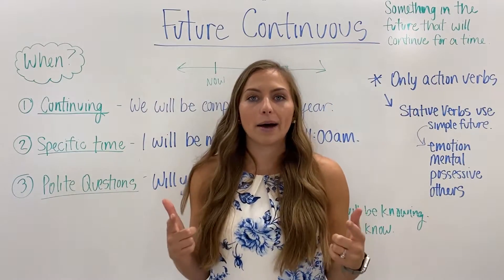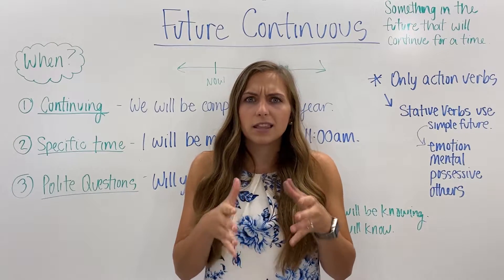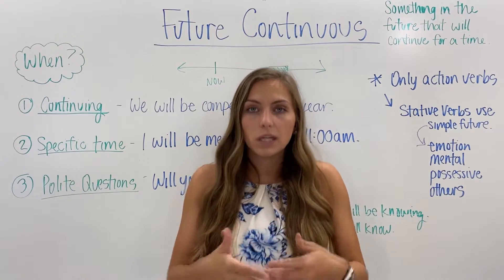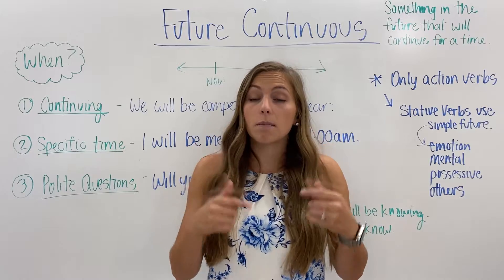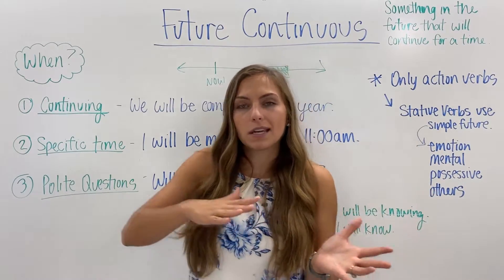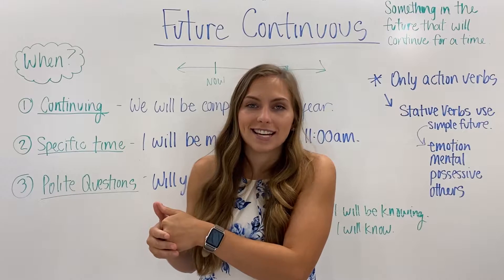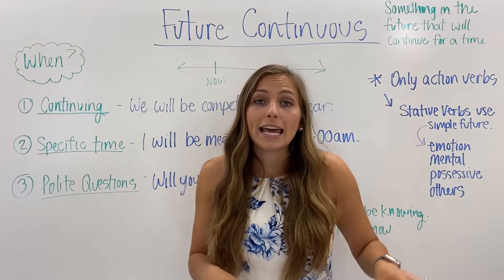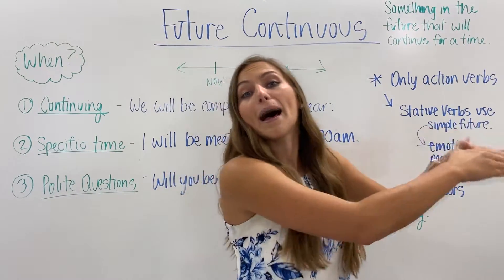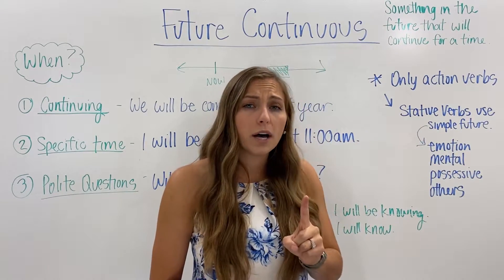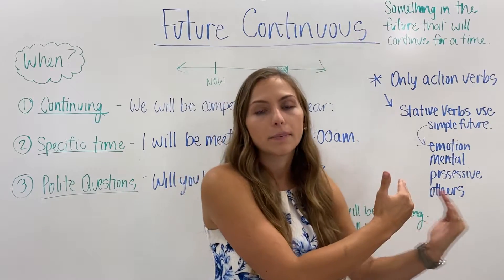If we think about all of the continuous tenses — the present continuous tense, we use it when we talk about something that is continuing now. For example, "I am teaching now." The past continuous tense is something in the past that happened for a time, like "I was teaching yesterday." And same thing with the future continuous: it's when we talk about something that will happen in the future for a time.